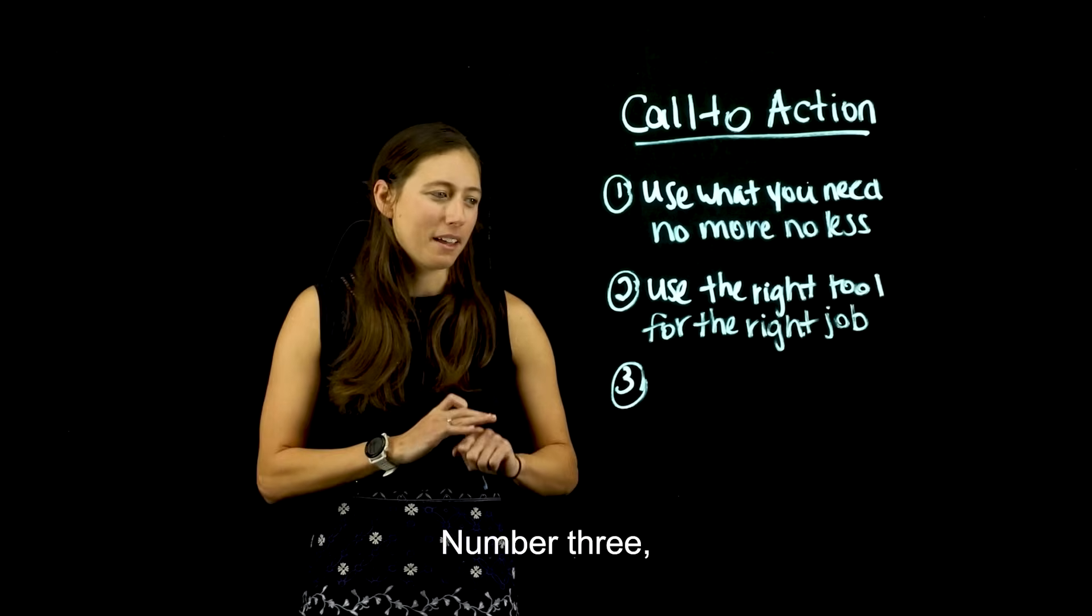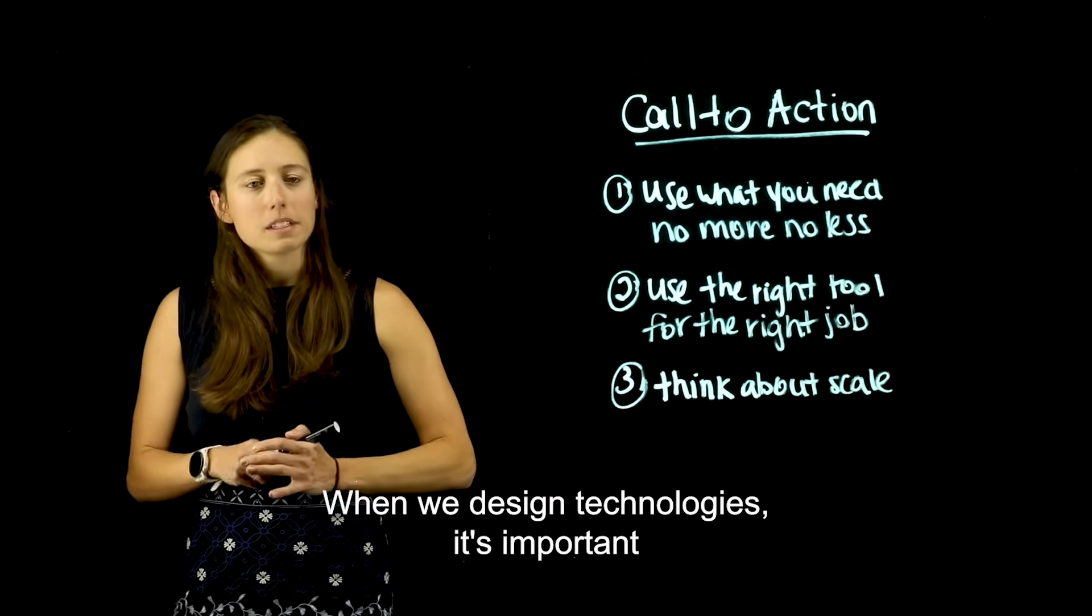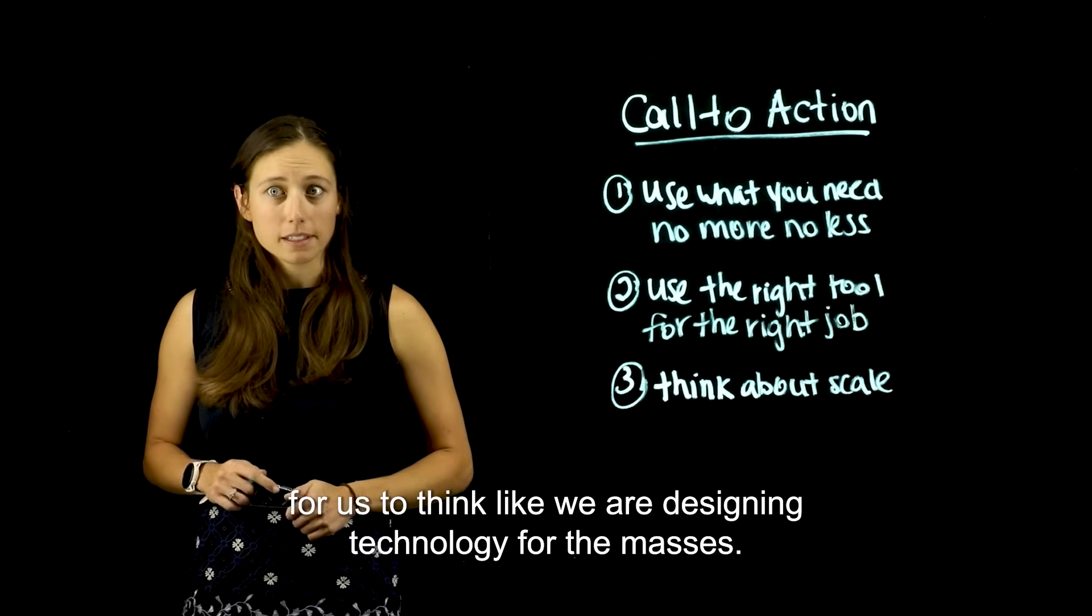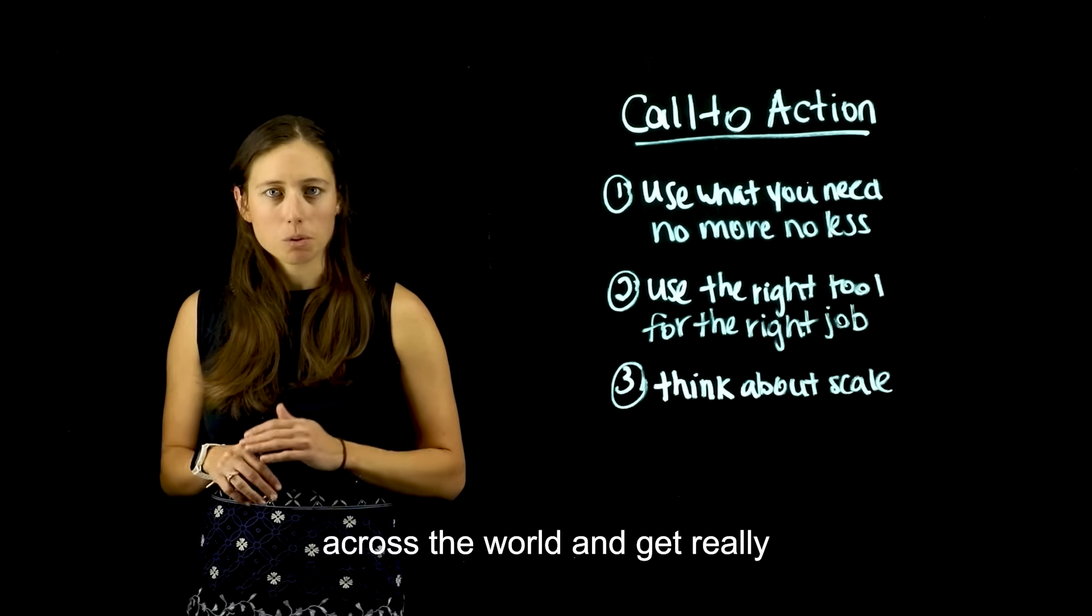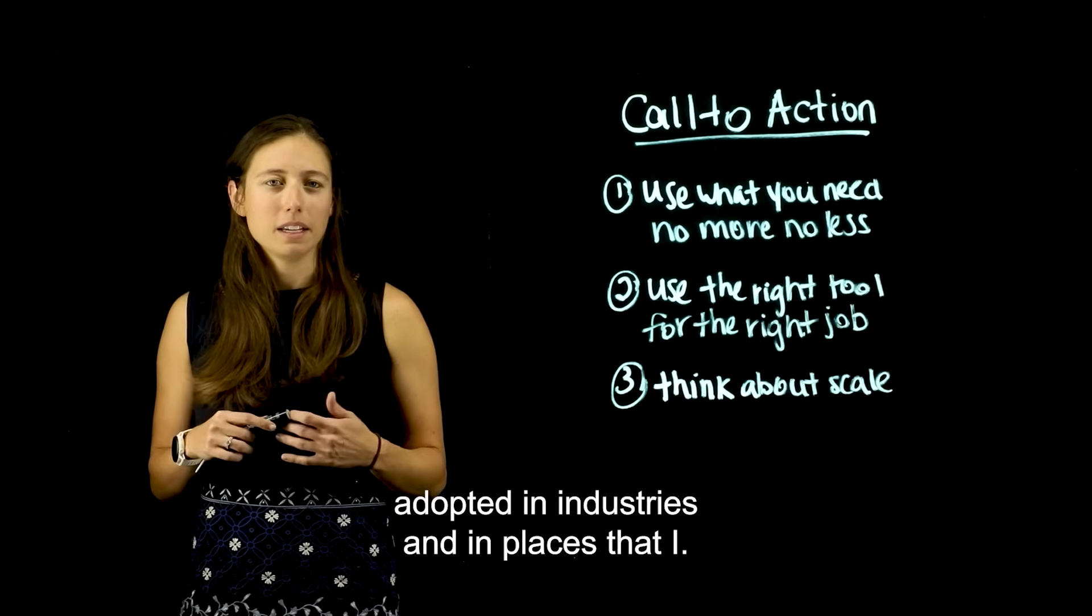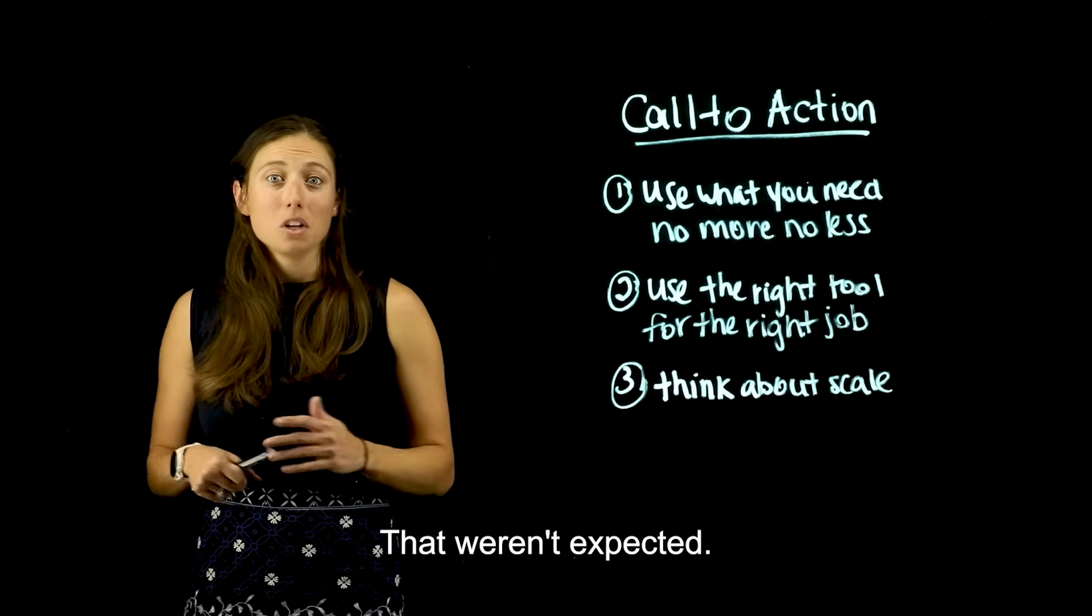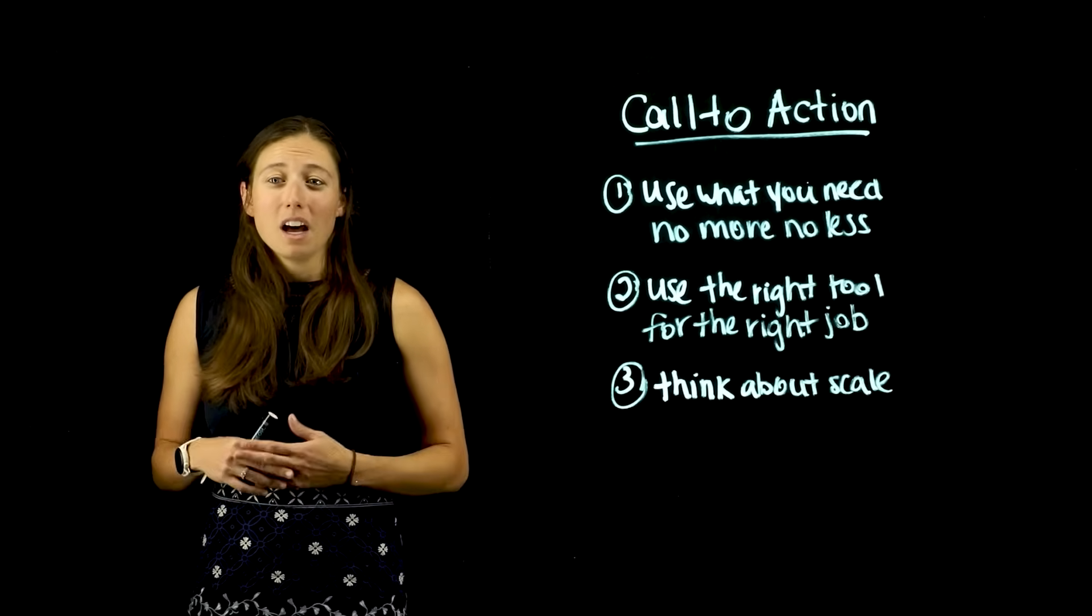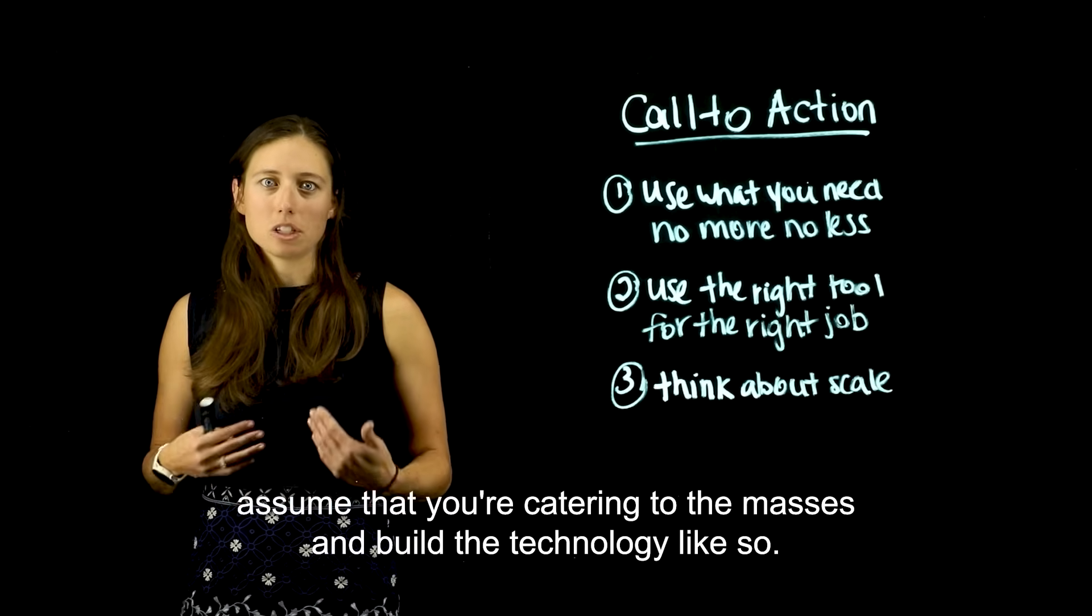Number three, think about scale. When we design technologies, it's important for us to think like we are designing technology for the masses. We have seen technology explode across the world and get really adopted in industries and in places that weren't expected. So when we're designing new models, new technologies, assume that you're catering to the masses and build the technology like so.